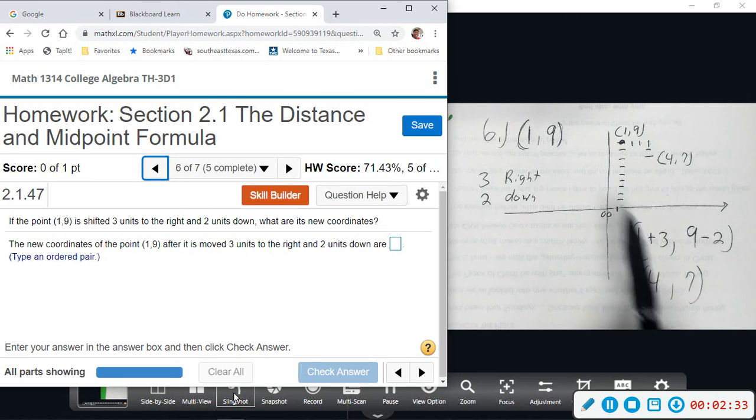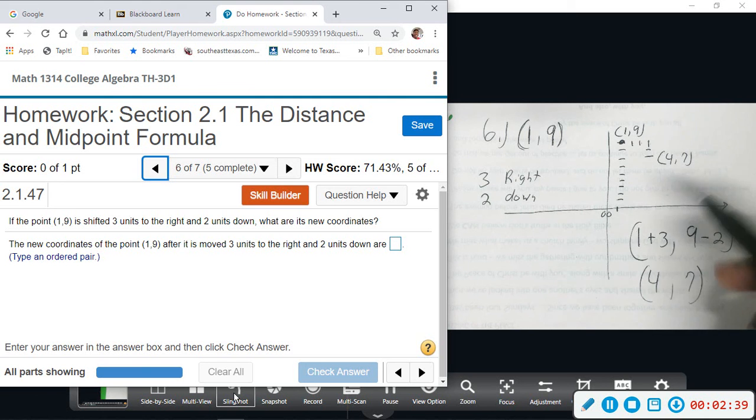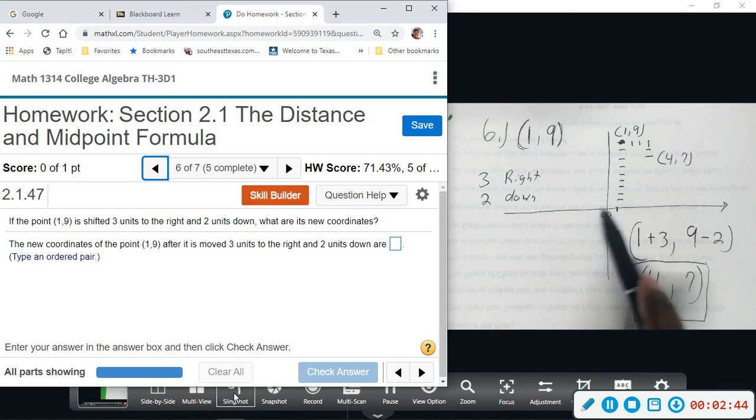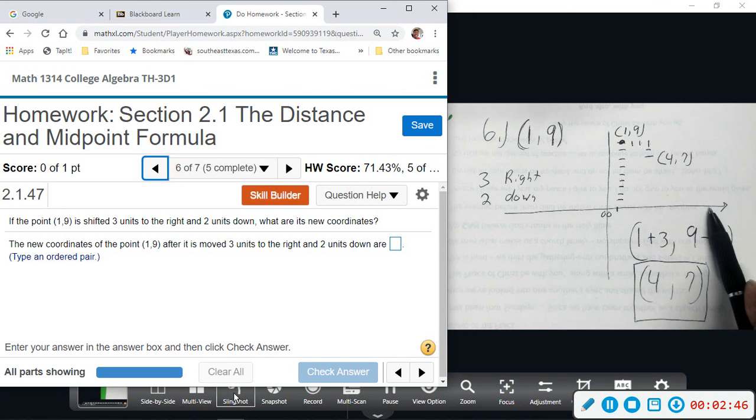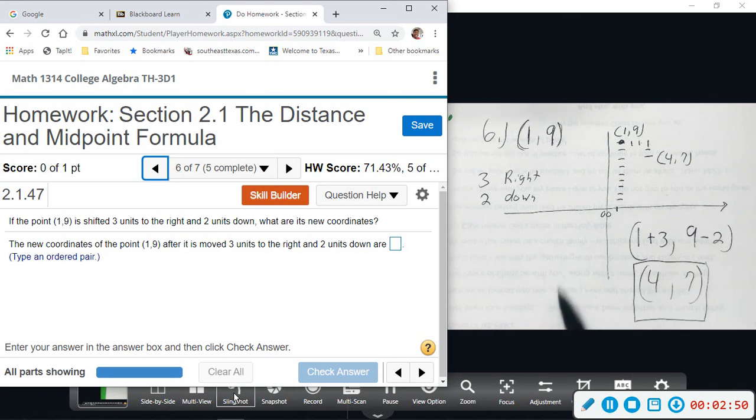Yours may not be right and down, it may be left, it may be up. We just need to understand the direction we're going. Right is positive, up is positive, left is negative, down is negative. So we would end up with (4, 7) in this scenario.